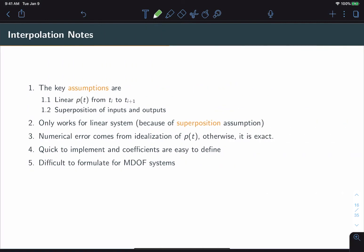So in summary, the key assumptions for the interpolation method are that we have a linear forcing function, a continuous forcing function from ti to ti+1, and that we can use superposition of inputs and outputs to solve for the response to that linear function. Now superposition should be a dead giveaway that this only works for linear systems, or at least systems that can be linearized in that time interval.